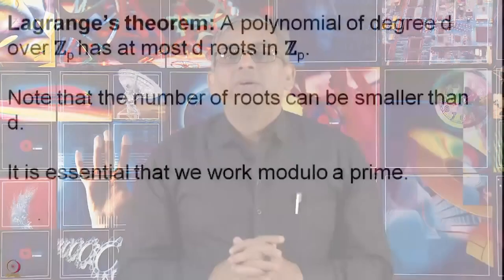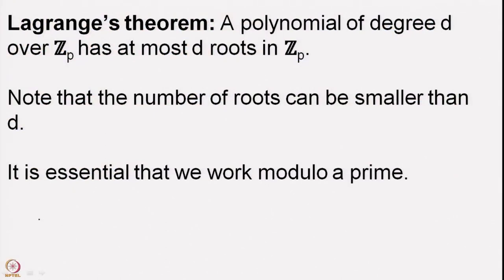Welcome back. We are looking at the theorem of Lagrange: if you take Z/pZ and take a polynomial of degree D with coefficients coming from Z/pZ, then there are at most D roots. A polynomial of degree D over Z_p has at most D roots in Z_p. The number of roots can of course be smaller than D, and it is also essential that we work modulo a prime.